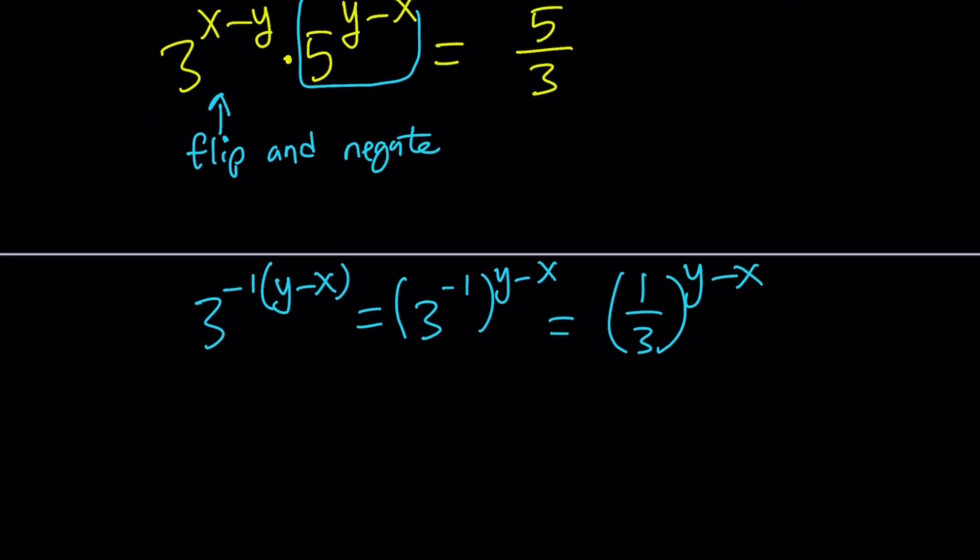Make sense? I negate the exponent and flip the base. Now let's plug it in. This is 3 to the power x minus y, and this is 5 to the power y minus x. Notice that now I got the same exponents.